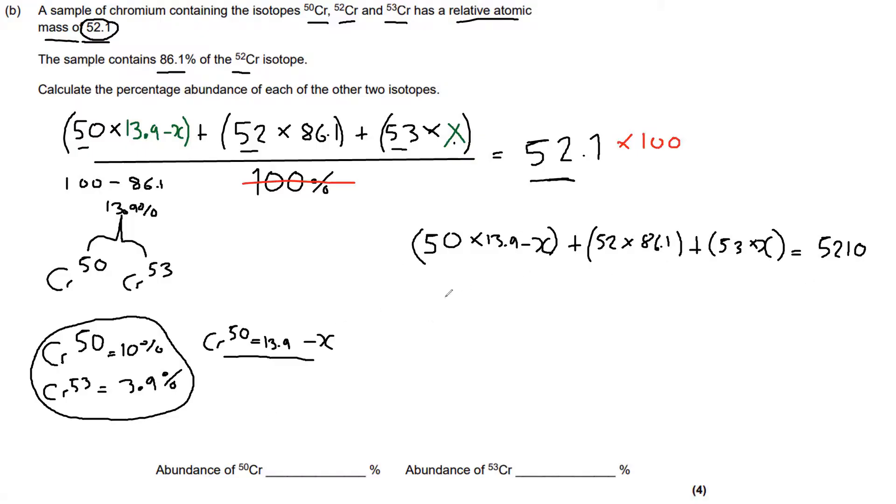And this is going to be 5,210. We've got no 100 underneath on the left-hand side now. So get rid of that. We times that top one by 100. So what we're going to do here now is multiply out these brackets. So let's multiply the first one. 50 times 13.9, use your calculator, is 695. Don't make that mistake. Make sure you multiply the x as well. I just forgot to multiply the x. So it's minus 50x. Now, 52 times 86.1 on your calculator is 4477.2. And 53 times x is just 53x.